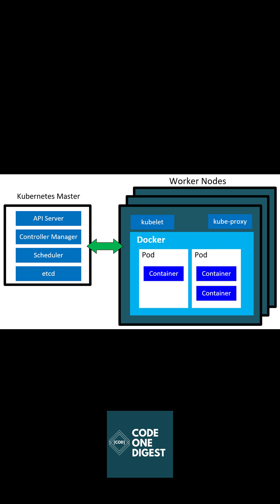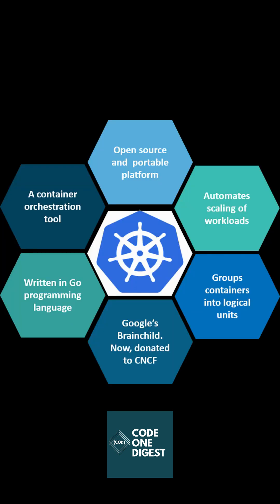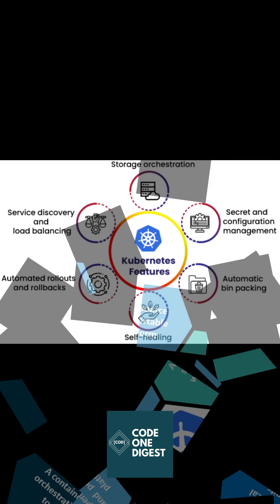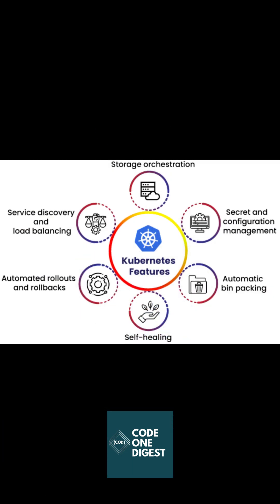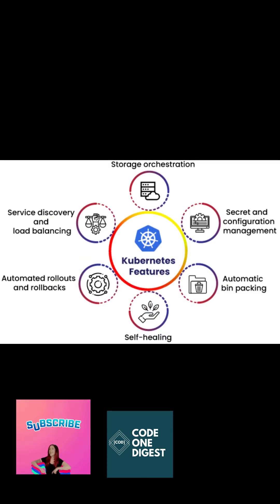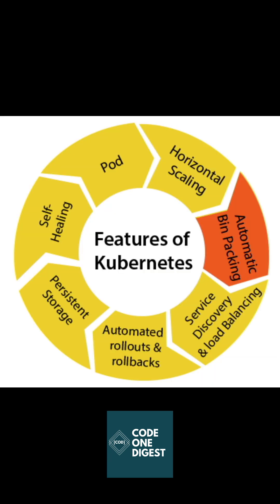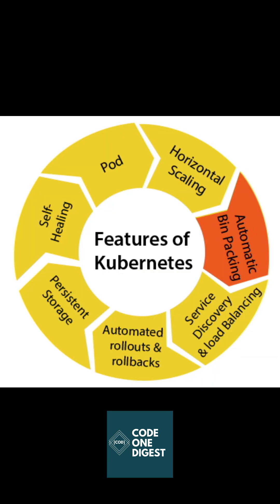It enables developers to easily build containerized applications and services. It is also used to scale, schedule, and monitor those containers. Kubernetes automates operational tasks of container management and includes built-in commands for deploying applications, rolling out changes, and scaling up and down.